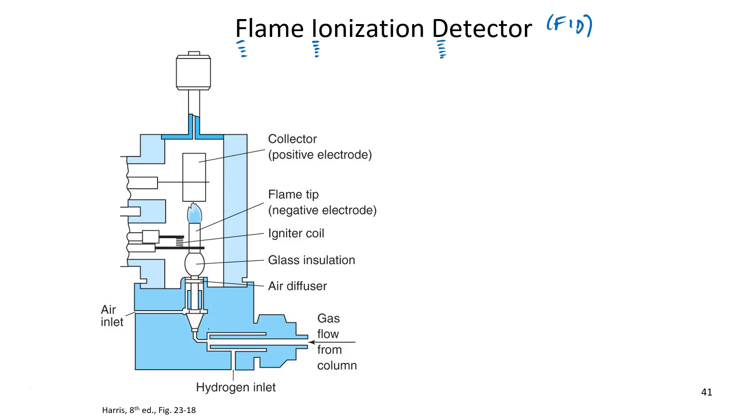The main thing to focus on in this figure is that this flame tip is biased negative relative to this so-called collector electrode. Yes, that's quite a large potential difference, isn't it?